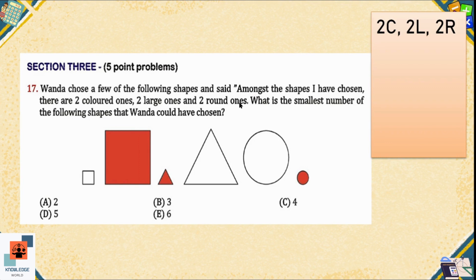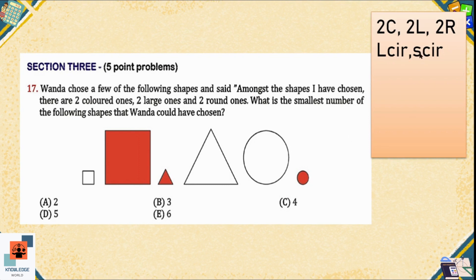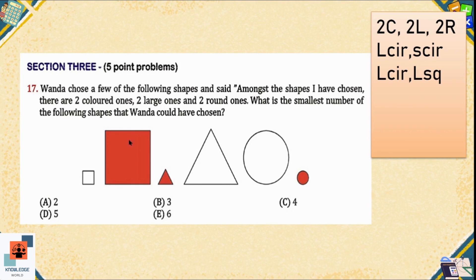We can see there are three colored shapes, three large shapes, and two round shapes. We start from the last criterion — two round shapes — because there are only two circles to choose from: one large circle and one small circle. That fulfills the two-round criterion. Now for the two-large criterion, one circle is already large, so we need to choose one more large shape. We have two options: a square or a triangle.